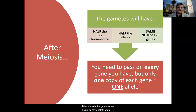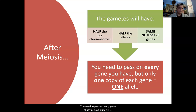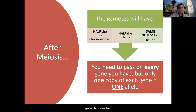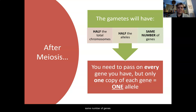After meiosis, the gametes are going to have half the total chromosomes, half the alleles, but the same number of genes. You need to pass on every gene that you have, but only one copy of each gene, which means one allele. So it's really important to understand the numbers here: the gametes are going to have half the total chromosomes, half the alleles, but the same number of genes. Remember, a gamete is an egg cell or a sperm cell — half the chromosomes, half the alleles, same number of genes.